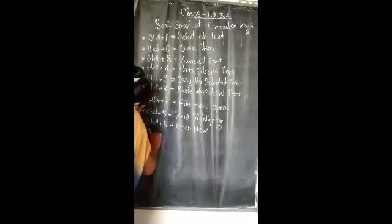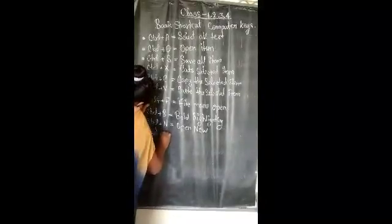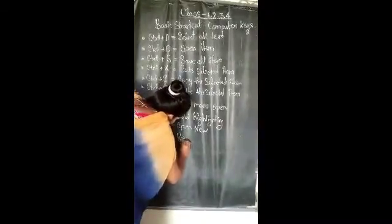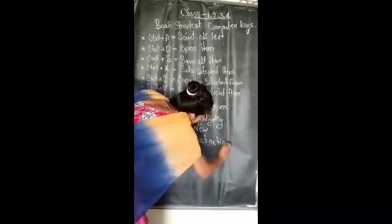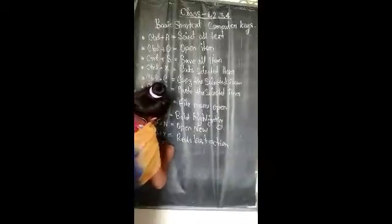Ctrl plus Z is used to undo the last action. Ctrl plus Y is used to redo the last action.